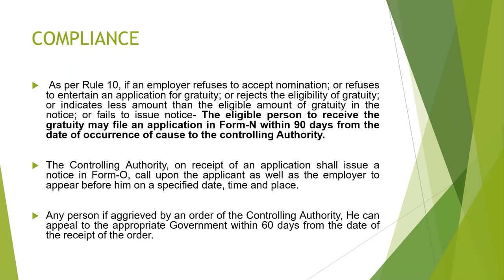As per Rule 10, if an employer refuses to accept a nomination, refuses to entertain an application for gratuity, rejects eligibility, indicates a lesser amount than eligible, or fails to issue notice — the eligible person may file an application in Form N within 90 days from the date of occurrence to the controlling authority. The controlling authority, on receipt of the application, shall issue a notice in Form O to call upon both the applicant and the employer to appear before it on a specified date, time, and place.